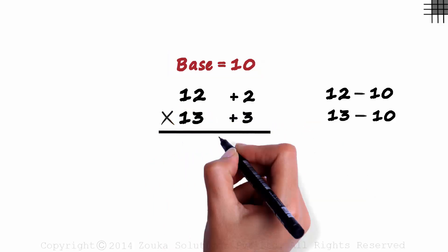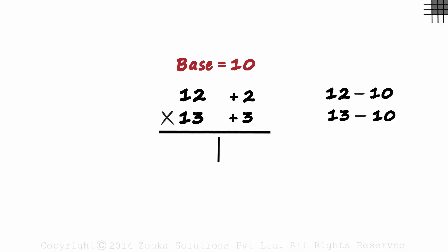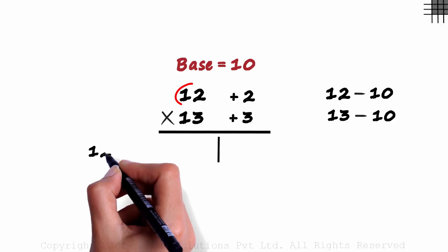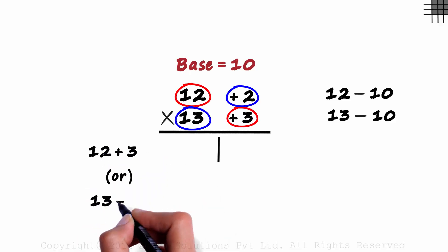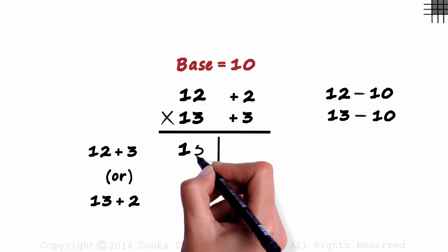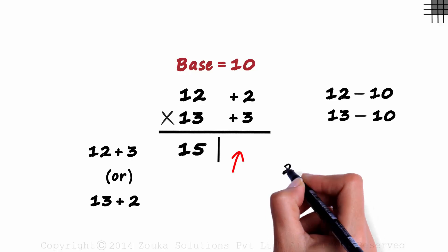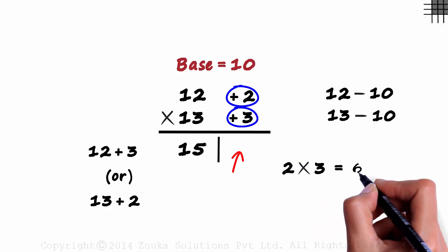And then we make the partition. On the left, we write the sum of any two of the diagonal numbers. And on the right, we write the product of the deviations. So on the left, it will be 12 plus 3 or 13 plus 2? 15. And on the right, we will have 2 times 3 which equals 6.